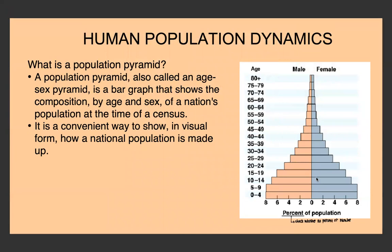Next we look at population pyramids, also called an age-sex pyramid. A population pyramid is a bar graph that shows the composition by age and sex of a nation's population at a time of census. Females are shown on the right and males on the left. The x-axis shows percent of population or actual numbers, and the y-axis shows age, so we can see how the population is broken up by age and gender.